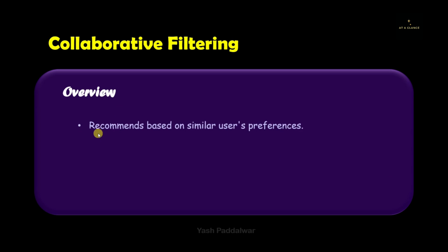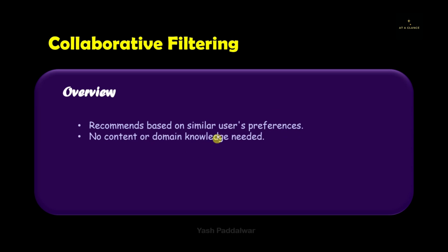Collaborative filtering recommends based on similar users' preferences. Instead of using the content, it checks similar users' preferences on interacting with any particular item. If two users have similar choices, and user 1 purchases something, then that purchased item will be recommended to user 2, who has similar choices as user 1. This is called collaborative filtering.